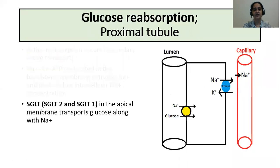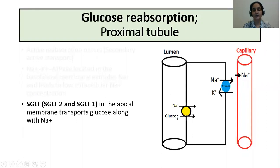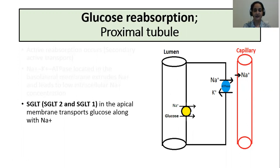The carrier protein present on the apical membrane, which transports glucose into the cell along with sodium, is called the sodium-dependent glucose transporter. It transports glucose into the cell against the concentration gradient, while sodium moves along the concentration gradient. Two transporters are identified in the nephron: SGLT2 and SGLT1.